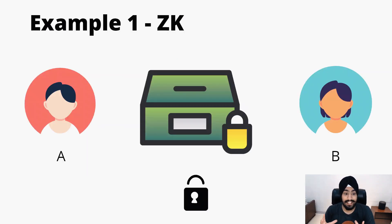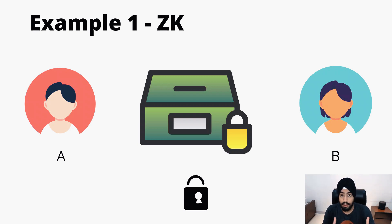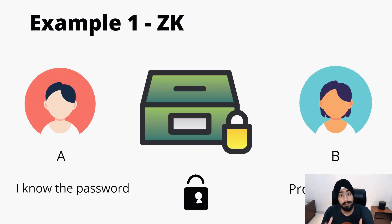In our first example we have two people, person A and person B. There will be a verifier and a prover. Here A is the prover and B is the verifier. Person A is claiming that he knows the password of the box — this box is unlocked. B states that he doesn't believe A, and that if A gives him the password then only he will believe it. Person A says he will not give the password but will prove that he knows it without revealing it.